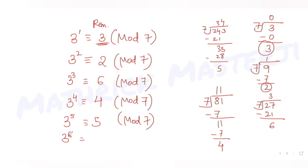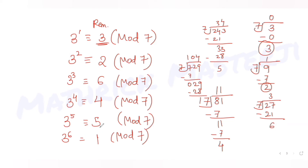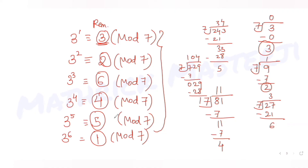For 3^6, that is 729; 729 divided by 7 gives remainder 1, so 3^6 mod 7 equals 1. Now for 3^7, which is 729×3, when you divide by 7 you again get remainder 3. So the pattern of remainders repeats after 3^6: the cycle is {3, 2, 6, 4, 5, 1} and then repeats.